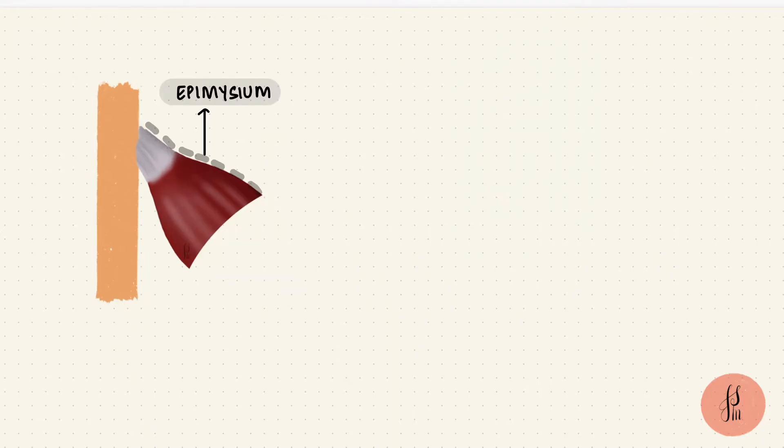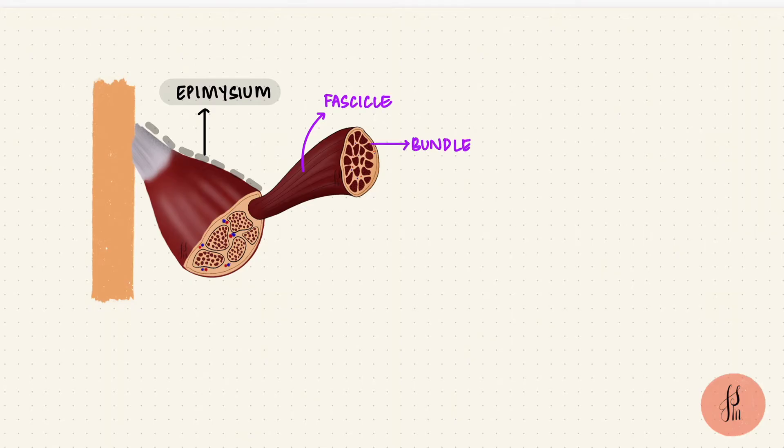If we look at a cross section of a muscle, it's made up of these fascicles, which are basically bundles of muscle fibers. The epimysium forms thinner connective tissue between the fascicles and this is called the perimysium. So the fascicles are surrounded by the perimysium.